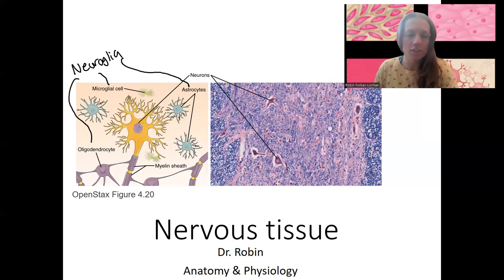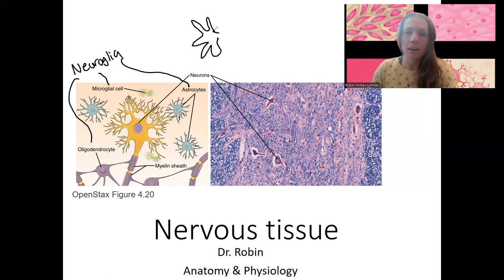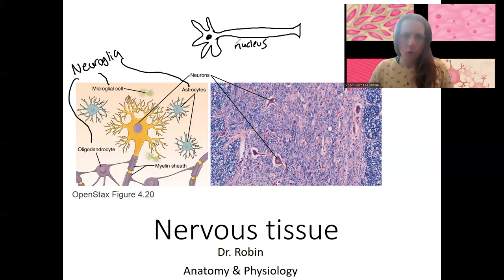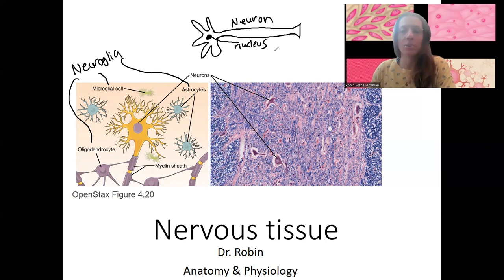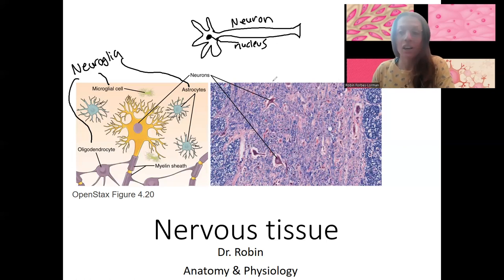Neurons are the larger cells that have cell processes off of them. Neurons have dendrites off of the cell body and one long axon. This is your neuron with the nucleus. Neurons are very important for sending electrical messages and communicating with the rest of the brain and the rest of the body. We'll talk a lot more about them.